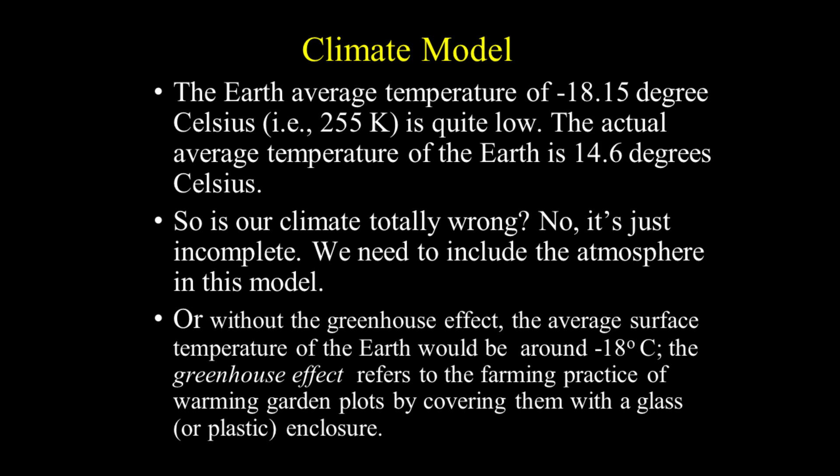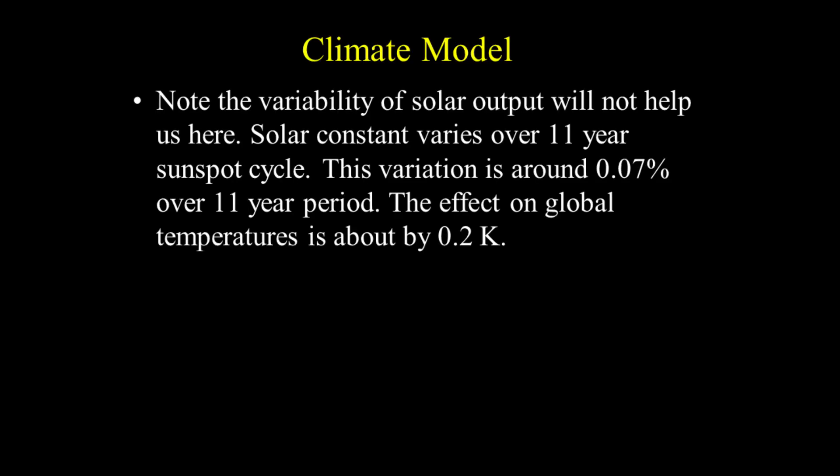The greenhouse effect refers to the farming practice of warming garden plots by covering them with a glass or plastic enclosure. Note that variability of solar output will not help us here. The solar constant varies over an 11-year sunspot cycle — this variation is around 0.07% over an 11-year period — and the effect on global temperatures is about 0.2 degrees Kelvin, an extremely small variation.